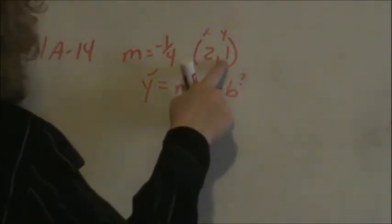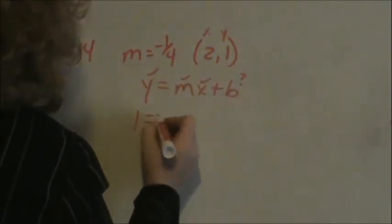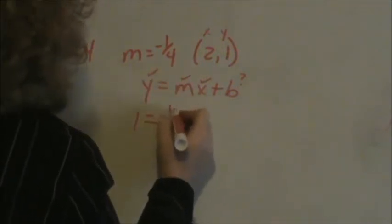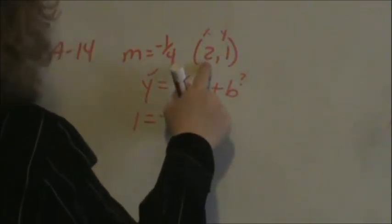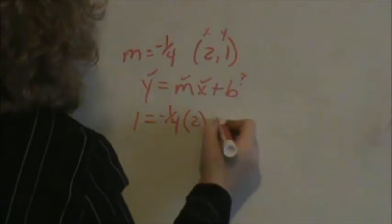So our y value is 1. Our slope is negative 1 fourth. Our x value is 2, and we don't know b.